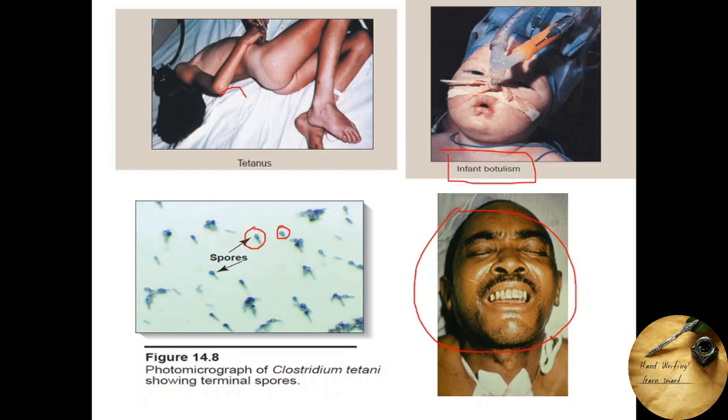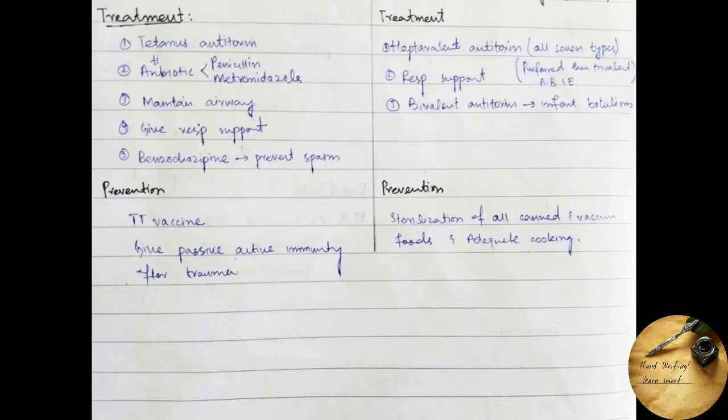Coming towards the treatment of tetanus caused by Clostridium tetani, it can be treated through tetanus antitoxin, by giving antibiotics like penicillin and metronidazole to eliminate the bacteria, supportive treatment like maintaining airway and giving respiratory support, and benzodiazepines to prevent spasm.